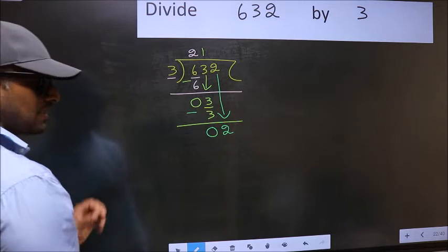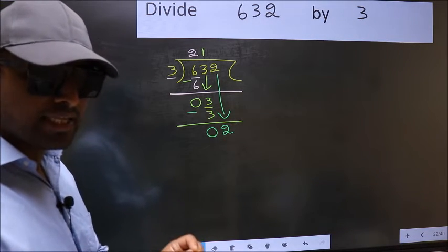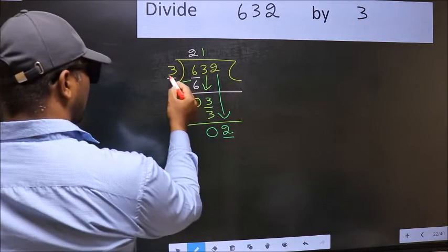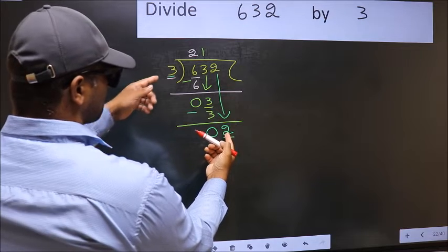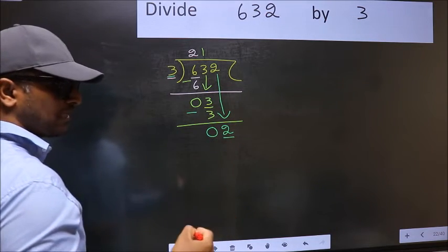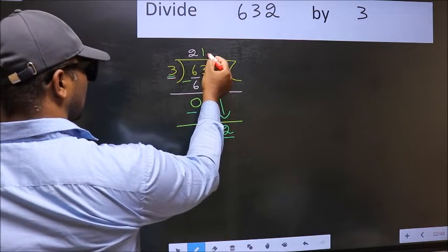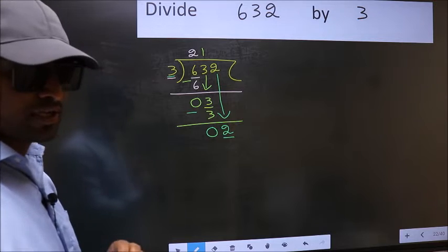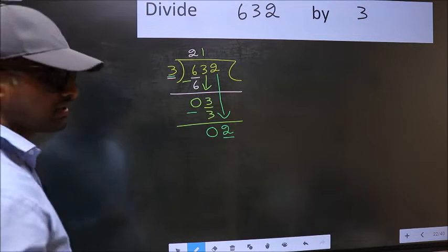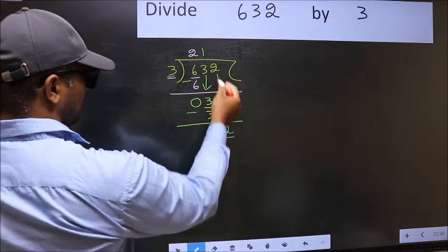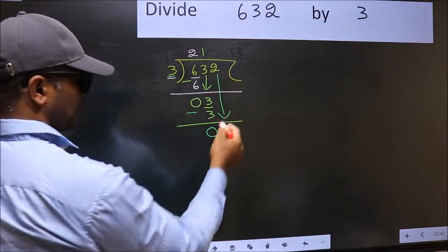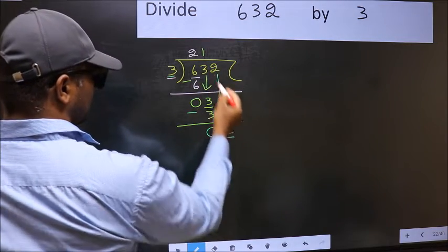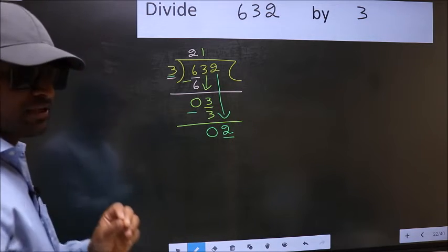After this step, the mistake happens. And the mistake is this. Here we have 2, and here 3. 2 is smaller than 3. So what many do is they directly put a dot and take 0 here. Which is wrong.